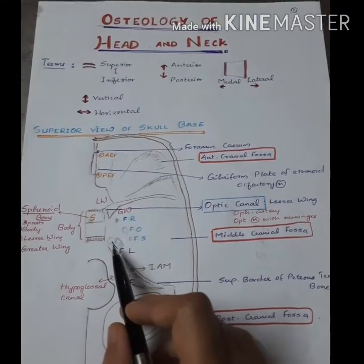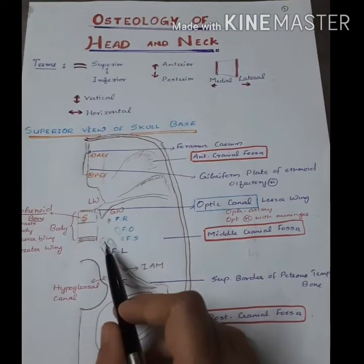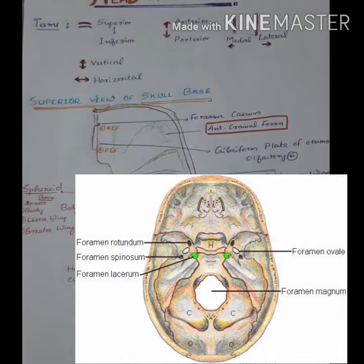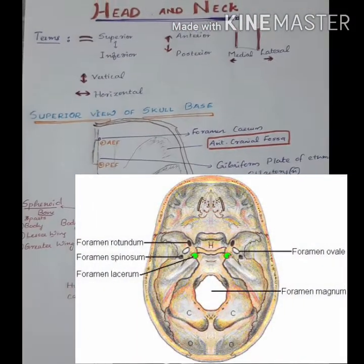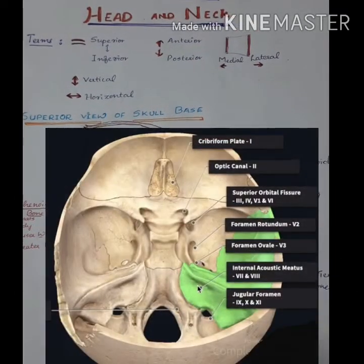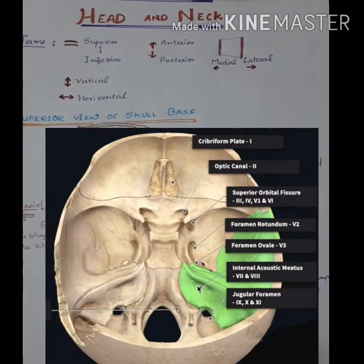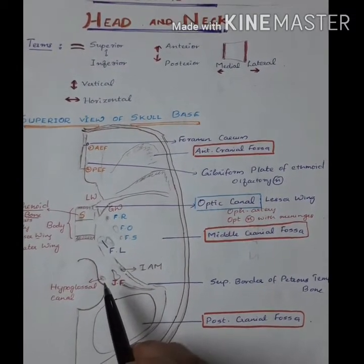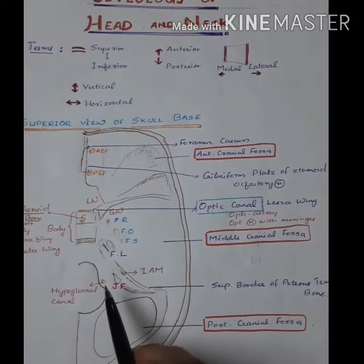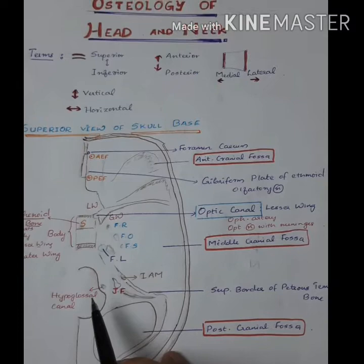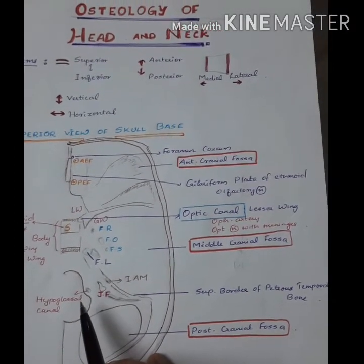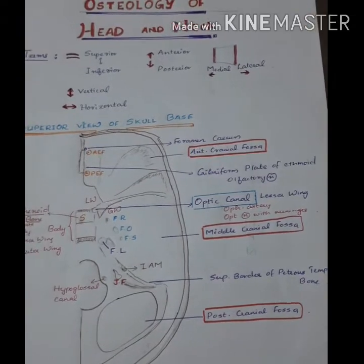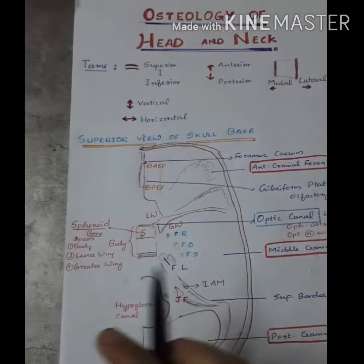Also present are the foramen lacerum, the internal acoustic meatus, the jugular foramen, and the hypoglossal canal.